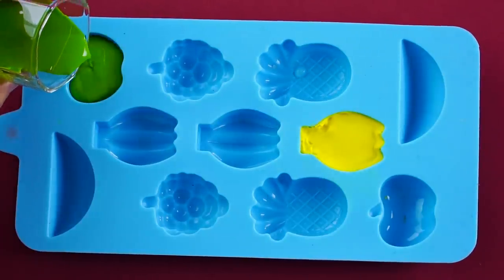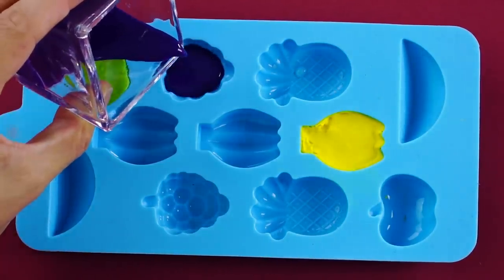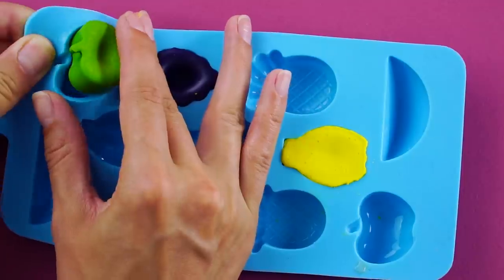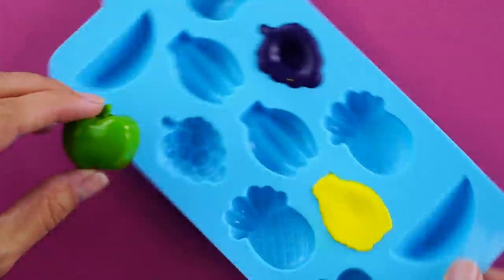Use a hair dryer to melt the crayons into liquid form. Then grab your fruit mold. Pour the melted crayons into the mold. Let the crayons harden in their new shapes. You can place them in the refrigerator to speed up this process.